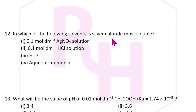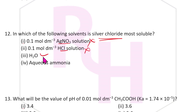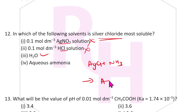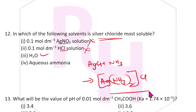Twelfth question: In which solvent is silver chloride most soluble? In water, Ag⁺ and Cl⁻ are common ions so solubility is low. In aqueous ammonia, AgCl reacts with NH₃ to form [Ag(NH₃)₂]⁺ — complex formation increases solubility significantly. Hence the answer is the fourth option: aqueous ammonia.